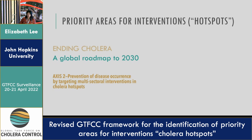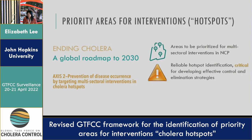The priority areas for interventions, or hotspot analysis as many people might be familiar with, is one of the key steps in the global roadmap. As part of trying to identify where interventions should be targeted in national cholera control planning, the identification of these priority areas is one of the key things that needs to occur as a first step. This is across multisectoral interventions — not specific to just OCV campaigns or just WASH interventions — but really meant to be a first-step triage for further discussion within the country. Reliable hotspot identification is critical for developing effective control and elimination strategies.